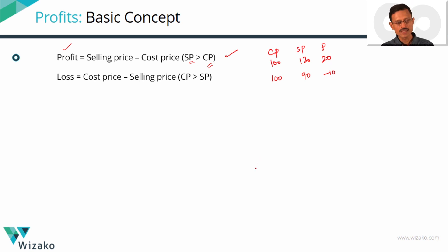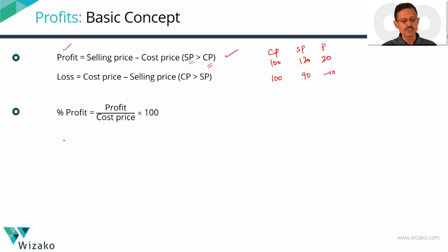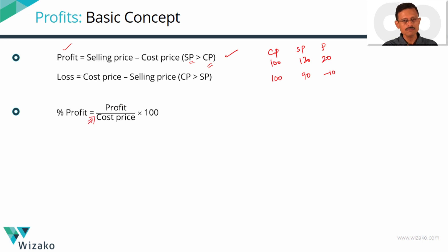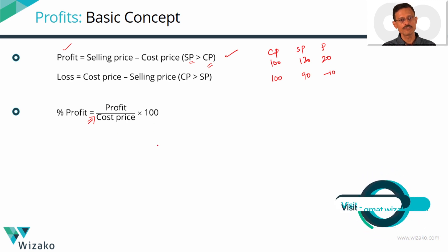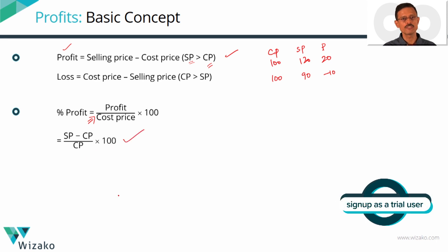The crucial part is defining profit and loss as a percentage. Usually they'll say the trader made a 40% or 20% profit. Percentage profit is profit divided by cost price, multiplied by 100. The denominator is the cost price — make a note of this. Since profit is selling price minus cost price, percentage profit equals (selling price minus cost price) divided by cost price, times 100.